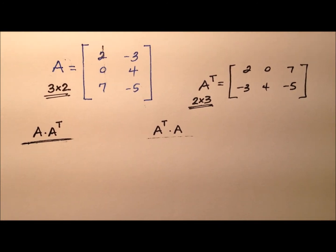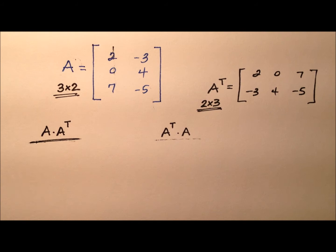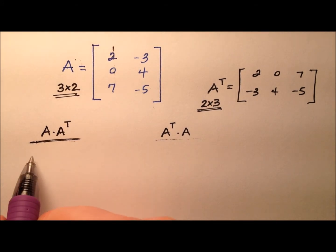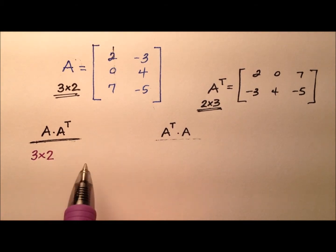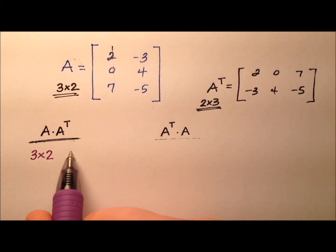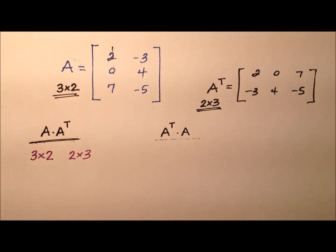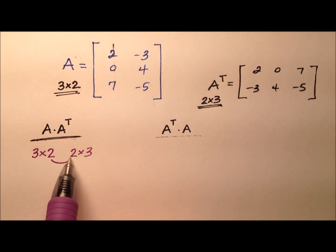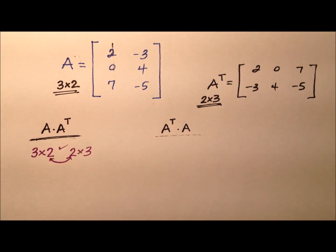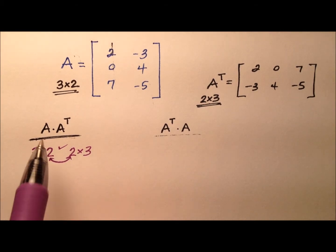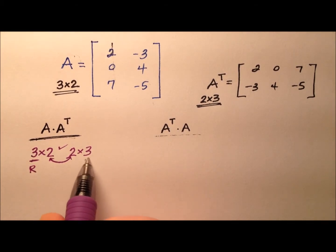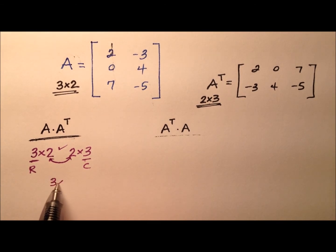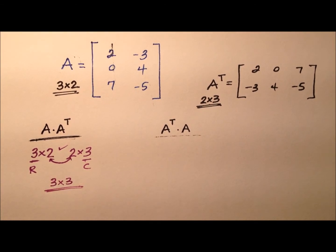Let's look at this first multiplication: A times the transpose of A. Consider their dimensions first. A was a three by two, and the transpose of A is a two by three. For multiplication, we ensure the inner dimensions are the same — and they're both two — so this matrix multiplication is defined. The product matrix will have three rows and three columns, giving us a three by three.